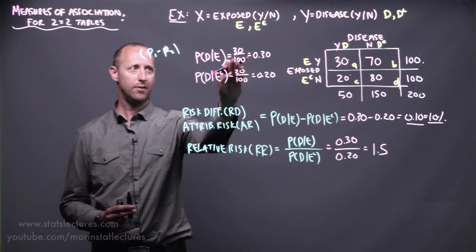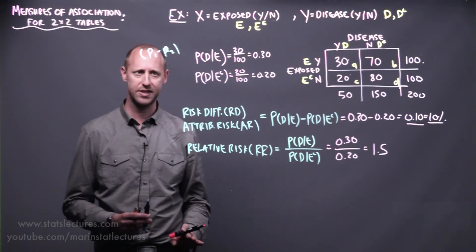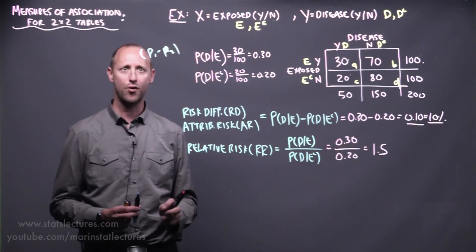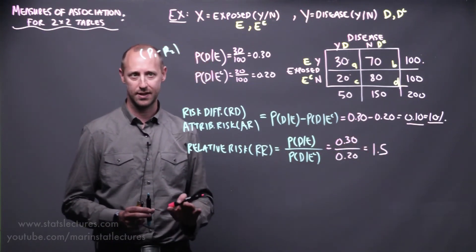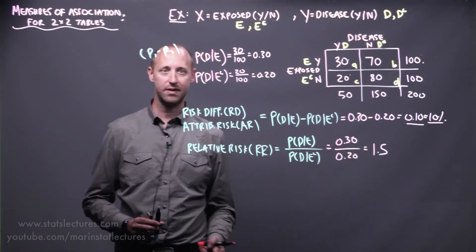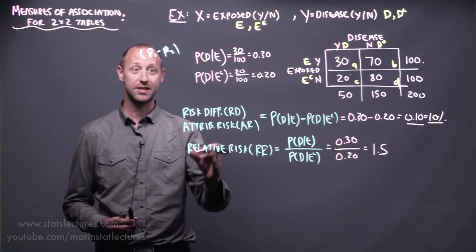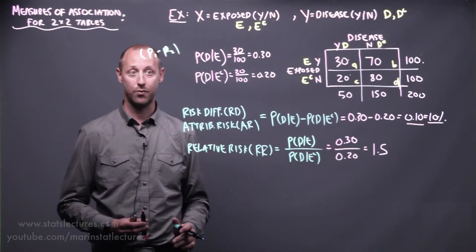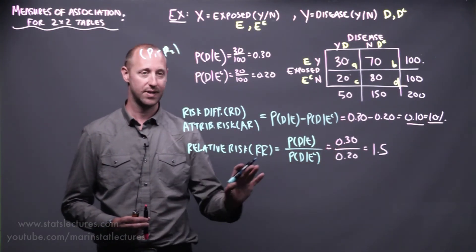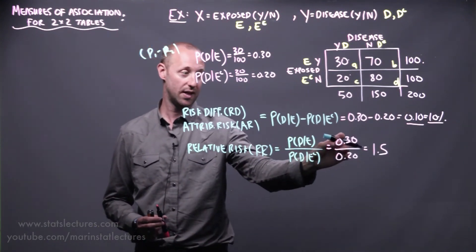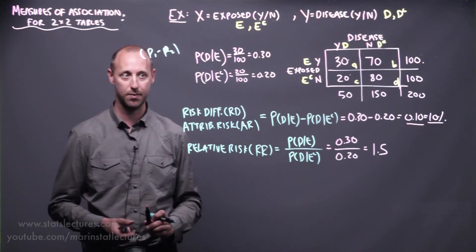These two here compare these two proportions or probabilities in similar ways, but on an absolute change or a relative change. Both of them give us good pieces of information in slightly different ways. And again, this is just an estimate. If we collected a different set of data, we'd get a slightly different relative risk. We can build a confidence interval for this. We can test the hypothesis about it, test if it's different from one. One being the null value, or being that these two are the same.